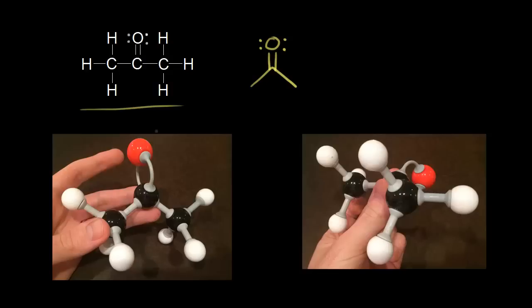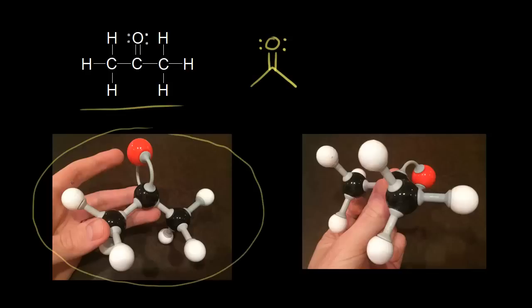What would be a three-dimensional bond line structure for acetone? On the left is a model of the acetone molecule. Hopefully you can see that these atoms are all in the same plane of the page, and so is the oxygen.